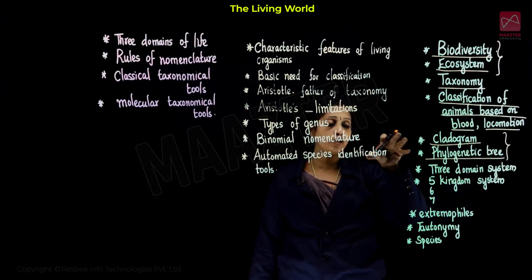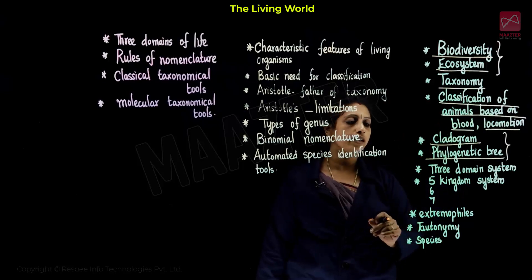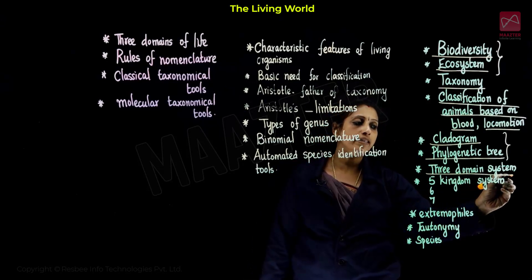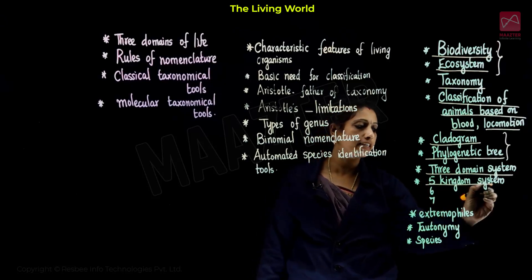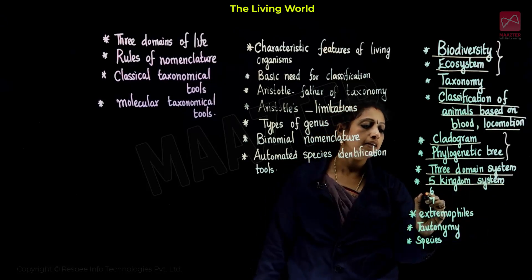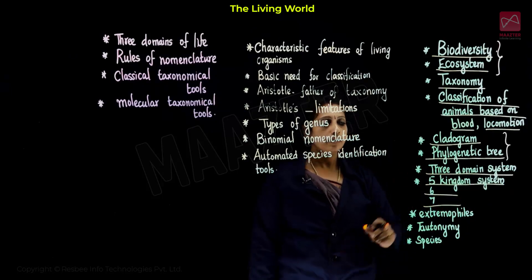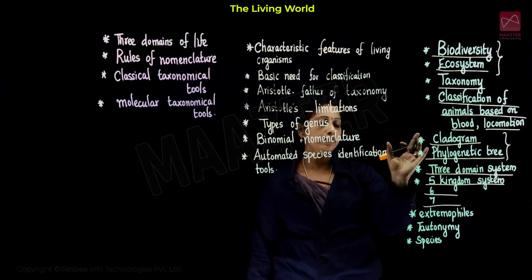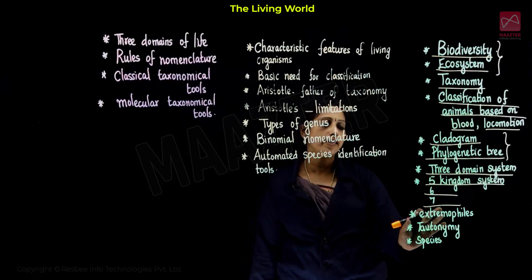This is the second section. This section versus prokarya — for example, the number itself is used in orderly. Then 3 Domain System. Here are the 3 domain system, 5 kingdom system, 6 kingdom system, 7 kingdom system etc. So, here are the main names. Maybe 3, or 5, or 6, or 7.